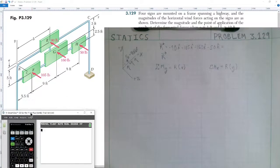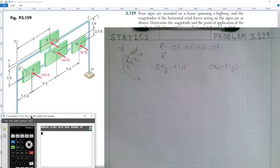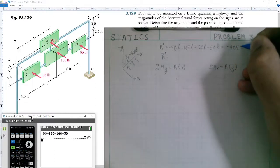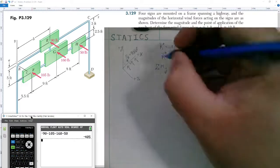We're going to calculate it on the calculator. We have negative 90, minus 105, minus 160, minus 50.